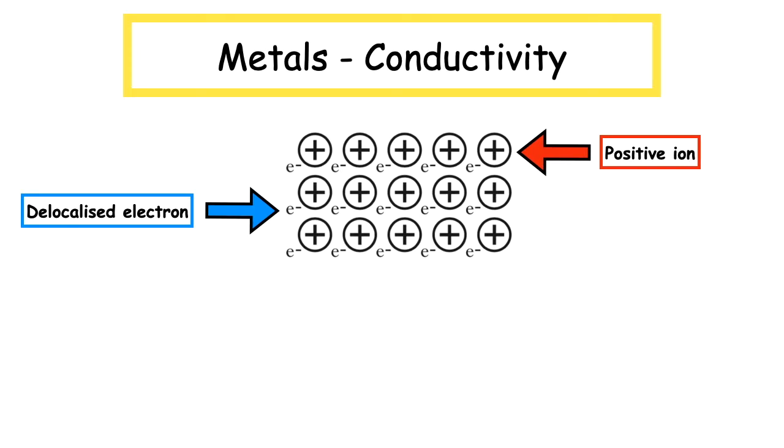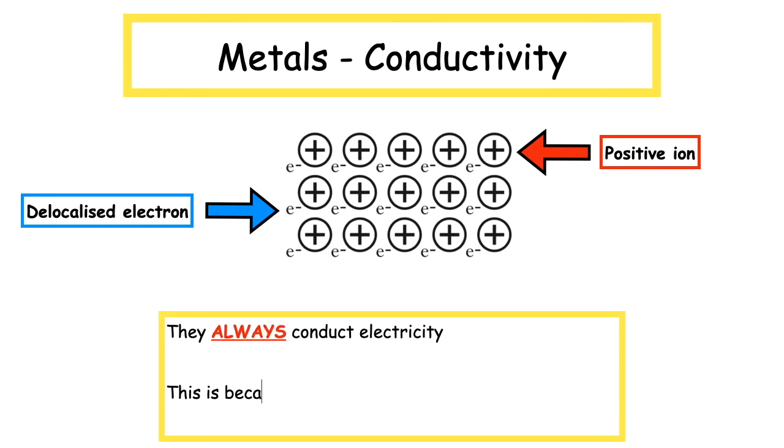Conductivity is the flow of charged particles. We know that metals always conduct electricity. This is because the electrons which are delocalized are able to move freely throughout the lattice structure.